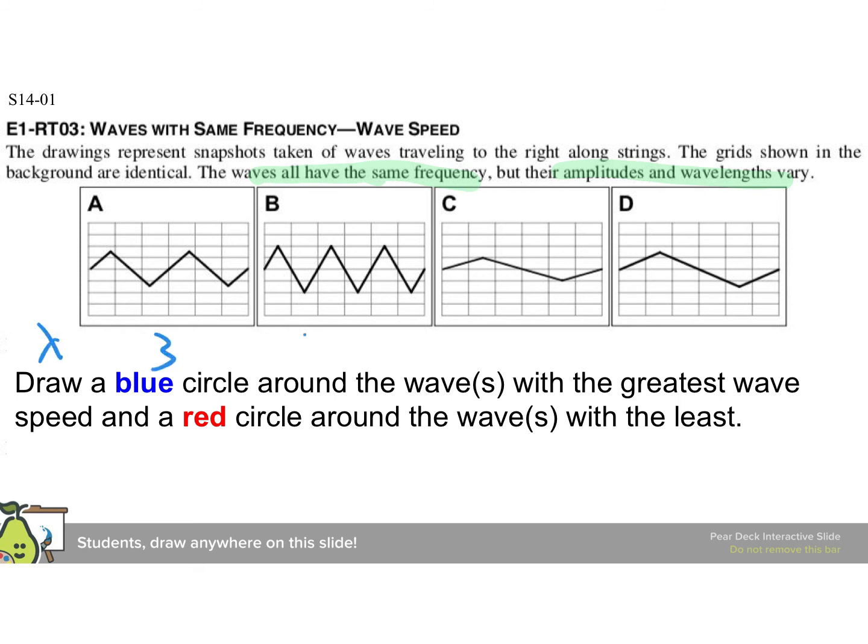That lambda is, again, 3 and 2 and 6 and 6. And here we say, well, if v equals lambda f, but the f's are the same, then v and lambda go in the same order, and so we can quickly see that, once again, those are our greatest, and that's our least.